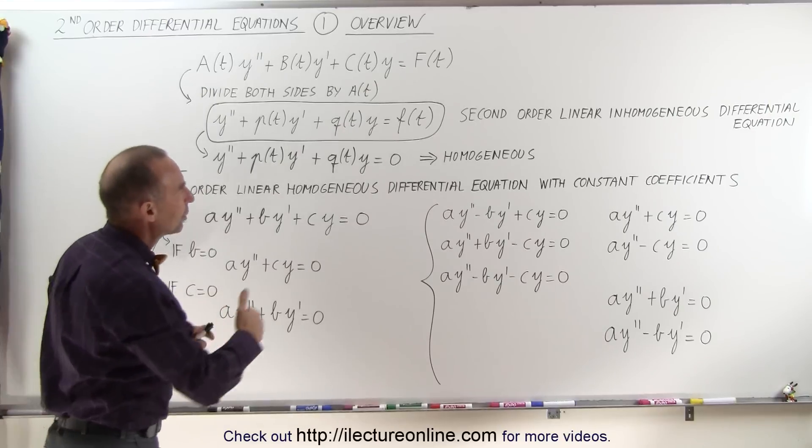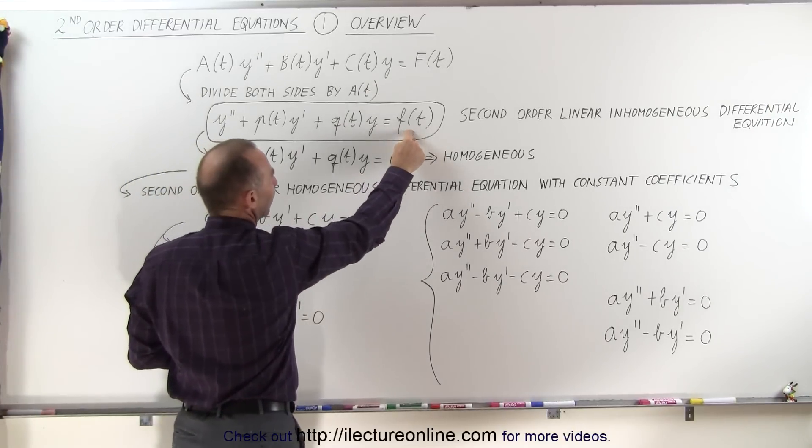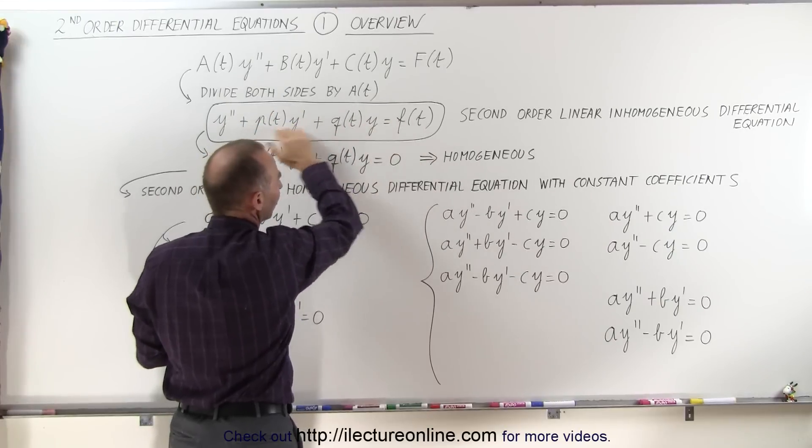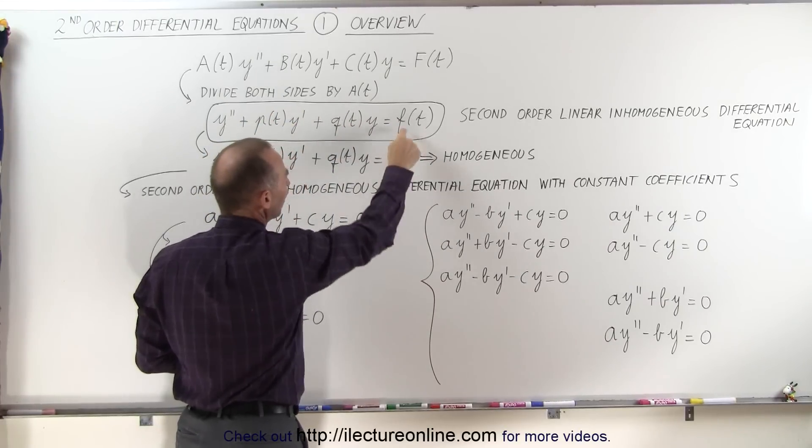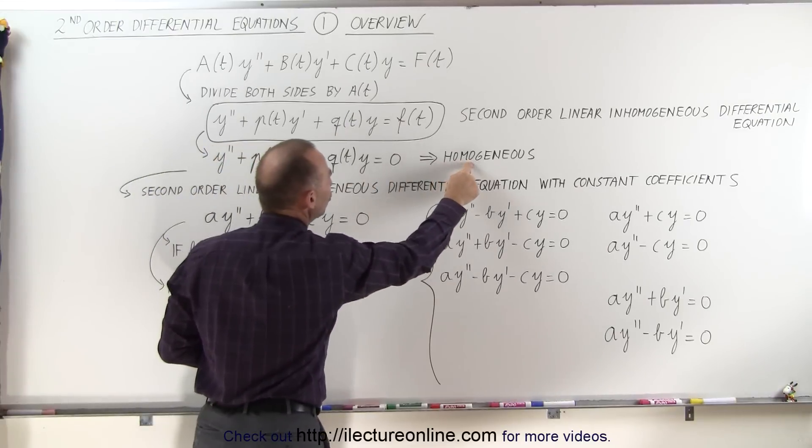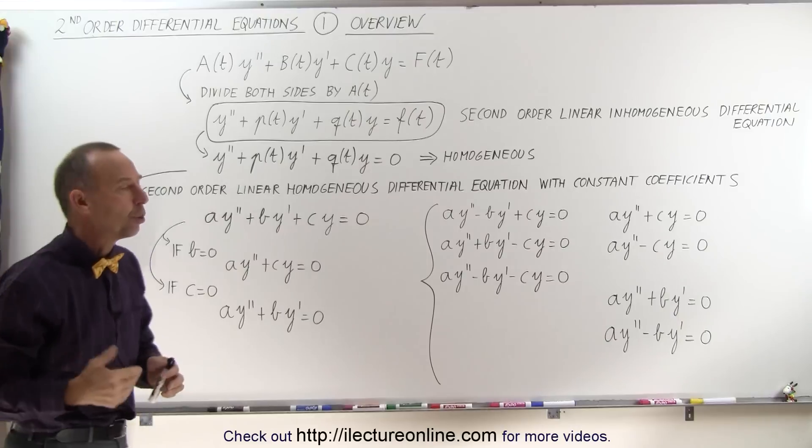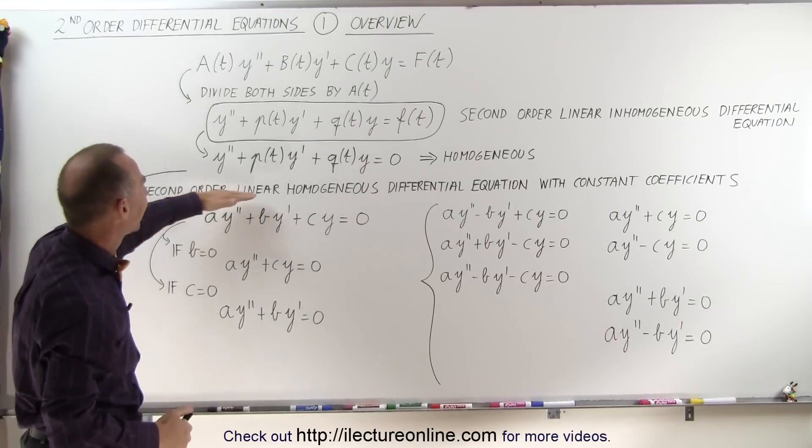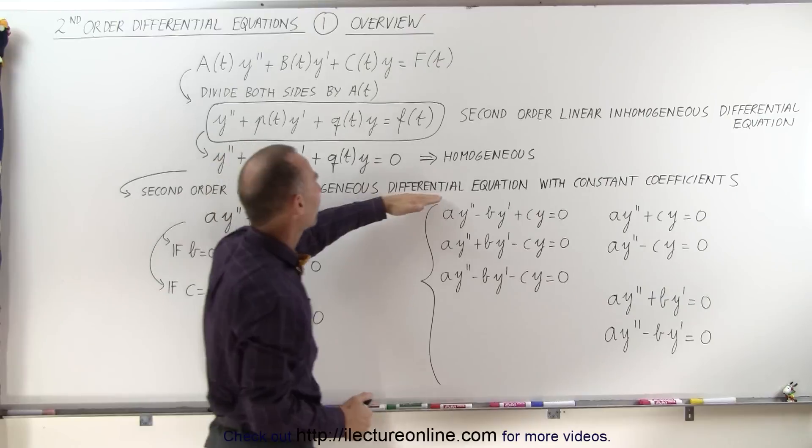Now sometimes we don't have a function of t on the right side. This is typically what we call the driving function of whatever sets up this equation. If we replace that by a zero, now this equation becomes a homogeneous equation instead of an inhomogeneous equation. So this would be called a second-order linear homogeneous differential equation.